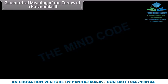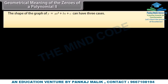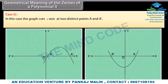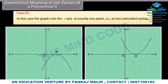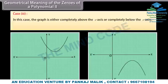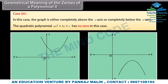The shape of the graph of y equals ax squared plus bx plus c can have three cases. Case 1: the graph cuts the x-axis at two distinct points a and a-bar, so the two zeros are the x-coordinates of a and a-bar. Case 2: the graph cuts the x-axis at exactly one point — two coincident points a and a-bar coincide to become one point a. Case 3: the graph is either completely above or completely below the x-axis; it does not cut the x-axis, so the quadratic polynomial has no zero.